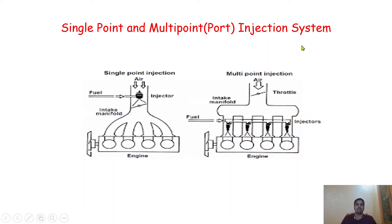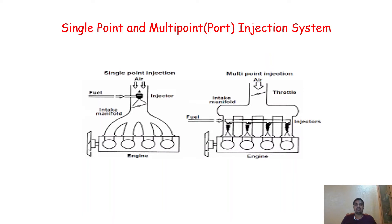The carburetor has been replaced by a device called the injection system. We will discuss injection systems and their types in detail in upcoming videos when we cover diesel engines. For now, we need to know that the injection system is one of the major components of IC engines through which we can inject the required amount of fuel inside the engine cylinder.